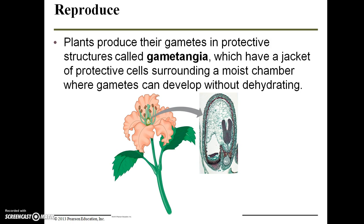Plants produce their gametes in protective structures called gametangia, which have a jacket of protective cells surrounding a moist chamber where gametes can develop without dehydrating. Just like animals, plants have reproductive cells that contain all of the plant's DNA, so they must develop in these protective chambers. From there, they can mature as gametes and be distributed by pollinators or wind. Sometimes plants will self-fertilize, producing clones of themselves.